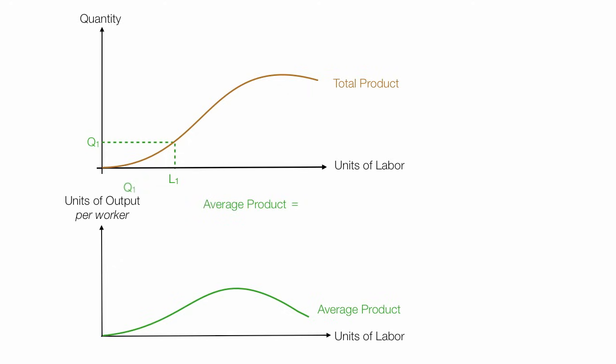In other words, quantity divided by labor is equal to average product. Your professor and your textbooks probably use the notation APL to represent average product of labor. Now, if I pull labor straight down, then average product is Q1 divided by L1 at that point in time.